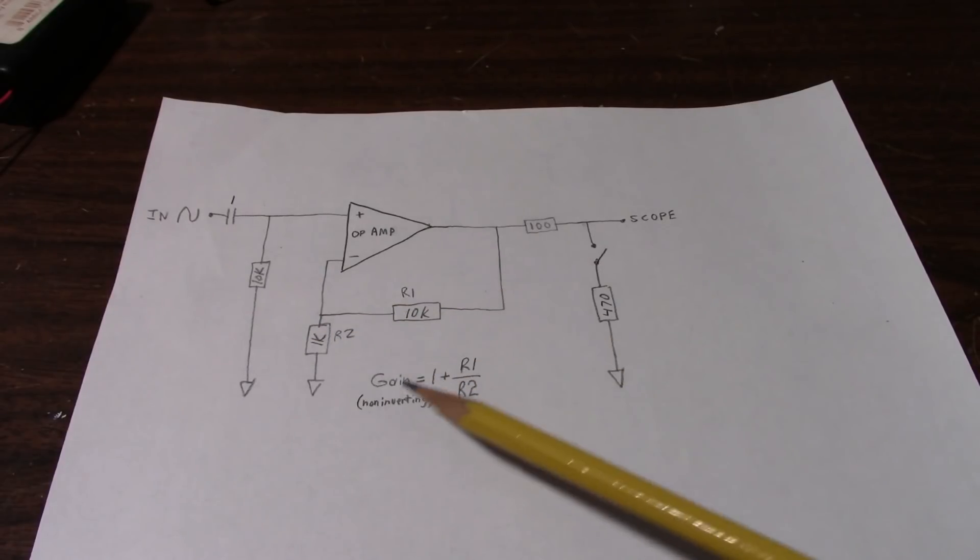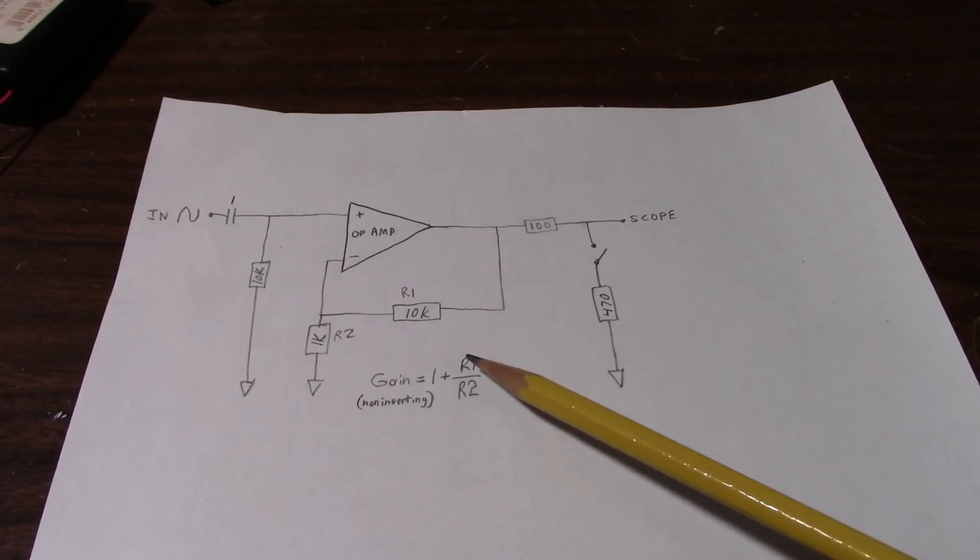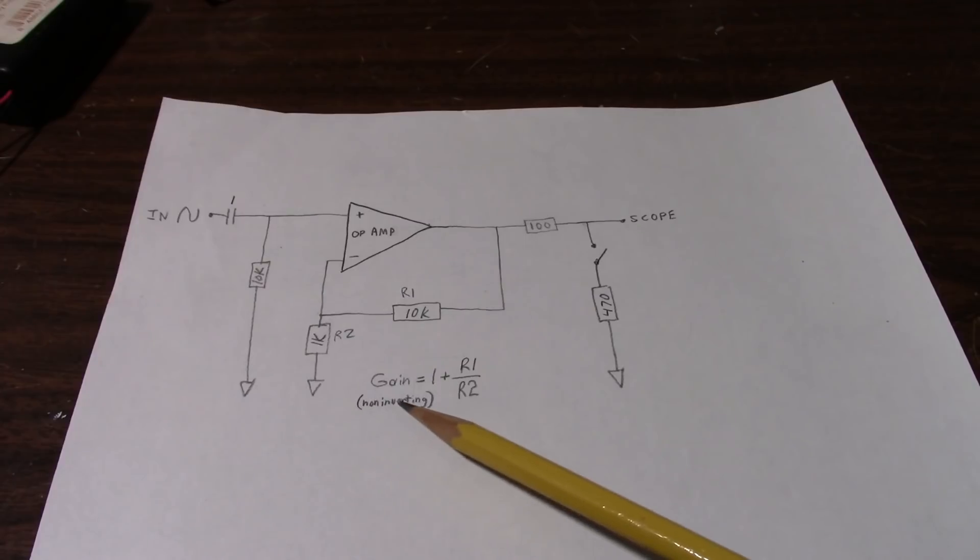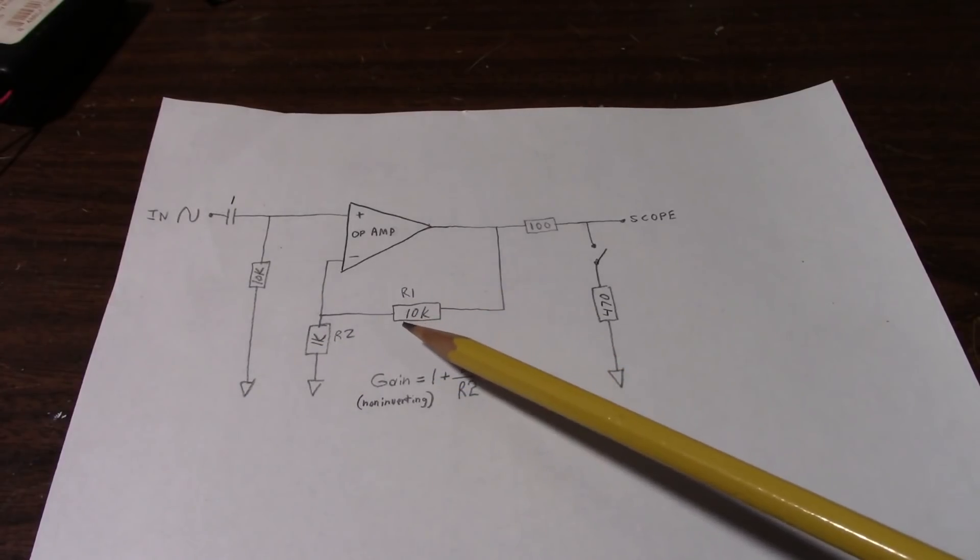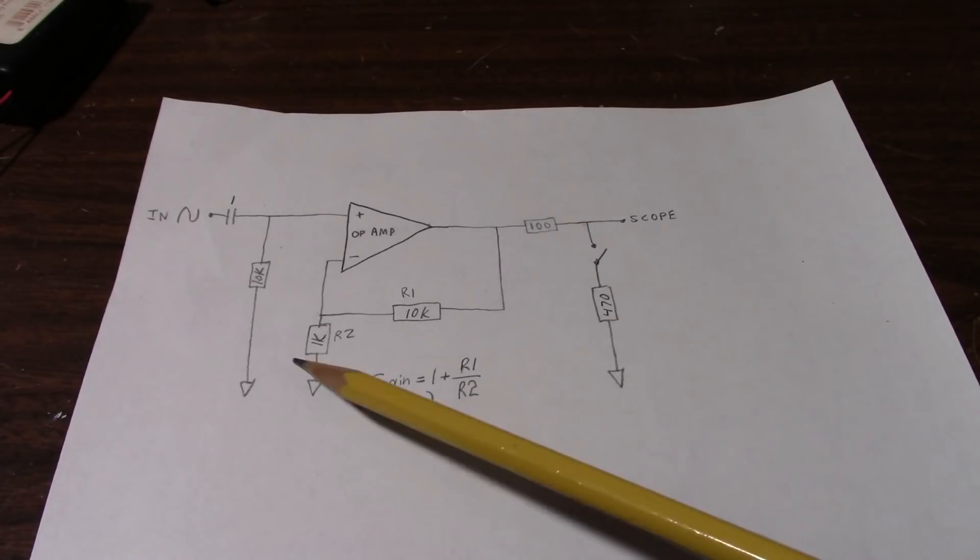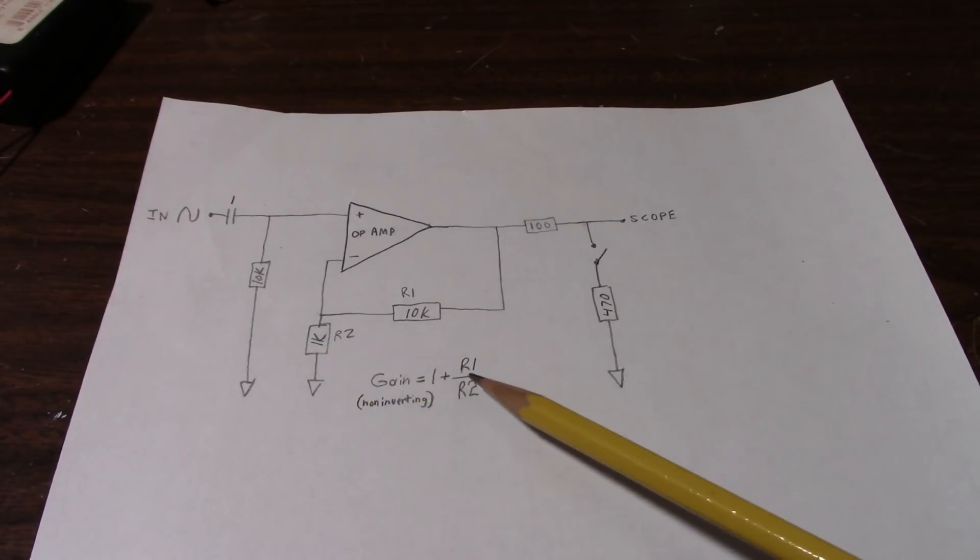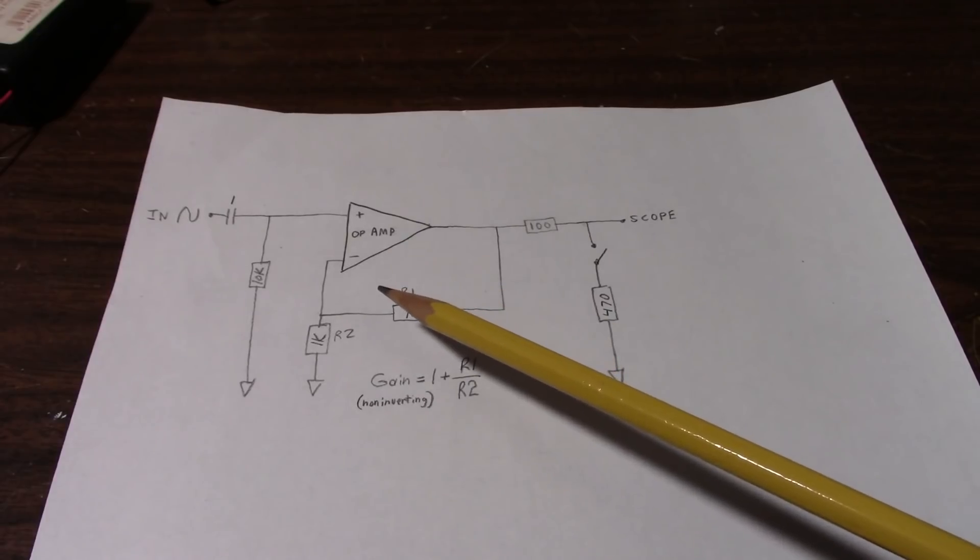And that's done with this formula here. So R1 over R2 plus 1 equals the gain of this non-inverting amplifier. So in this case, the gain is set to 10k divided by 1k, which is 10 plus 1. So the gain of this amplifier is 11.